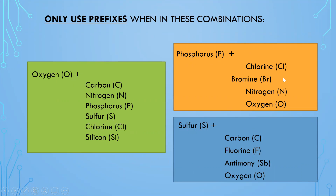There are really only about twelve combinations where you're going to use a prefix — one of those was duplicated. Just because you see a subscript does not mean you add a prefix; it must be one of these special combinations. I do not expect you to memorize these — that's why you should write them down. So let's now look at some examples.